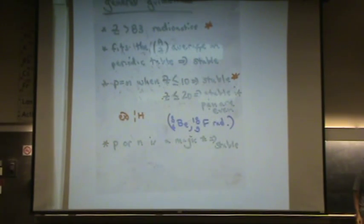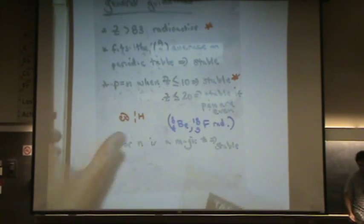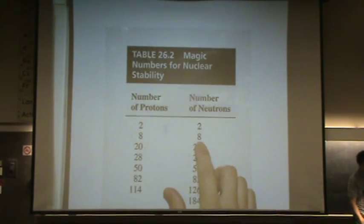Take a look at helium. Helium has how many protons? Two and how many neutrons? Two. Helium's double magic. It's a really stable element, isn't it?